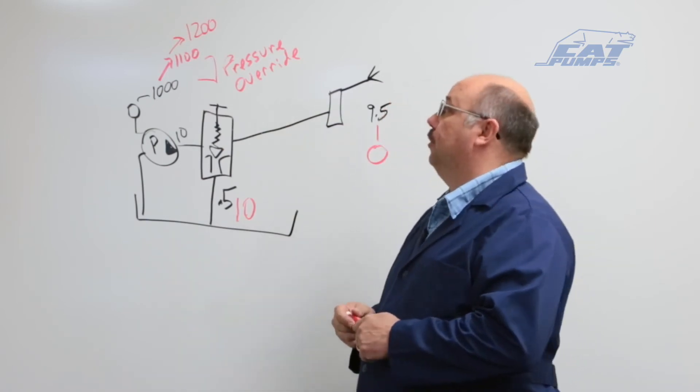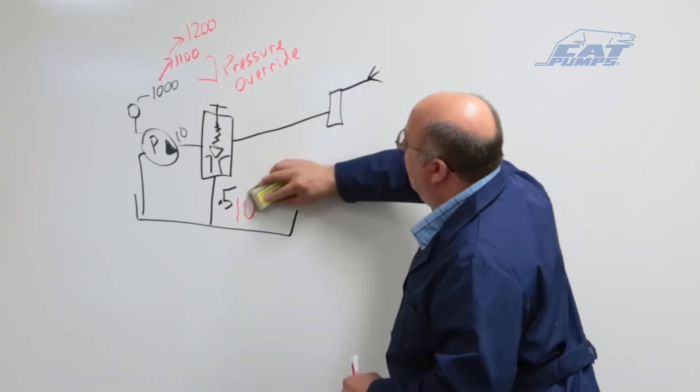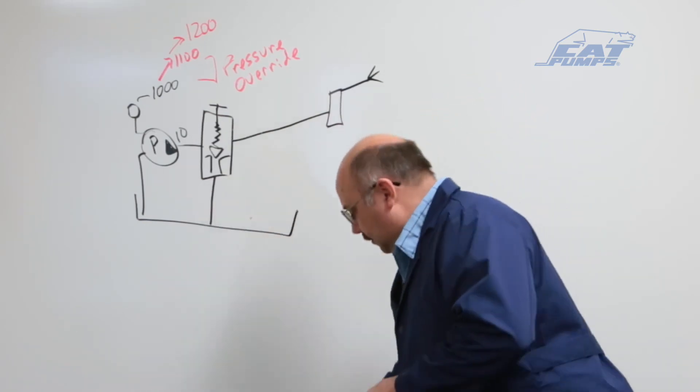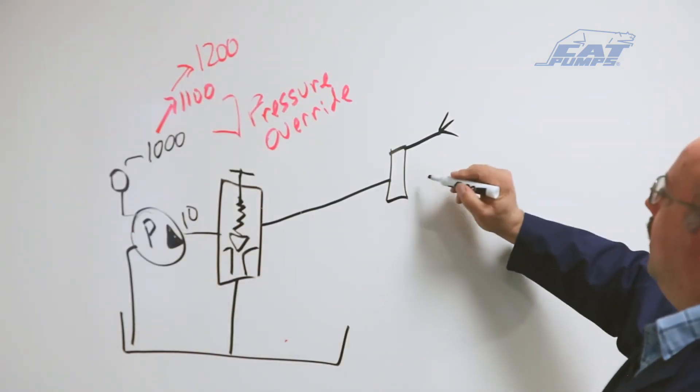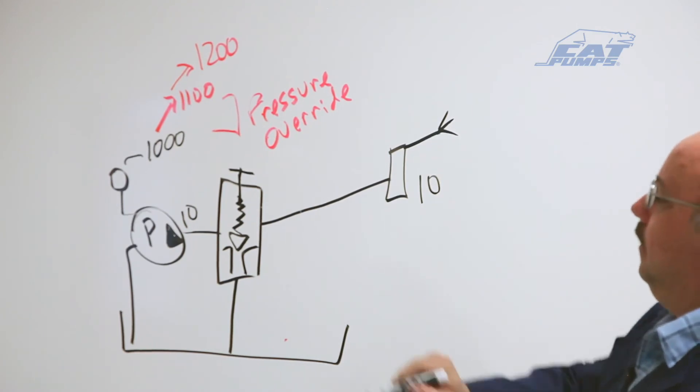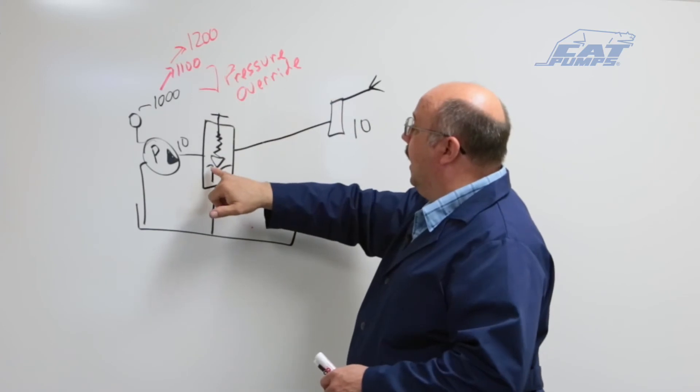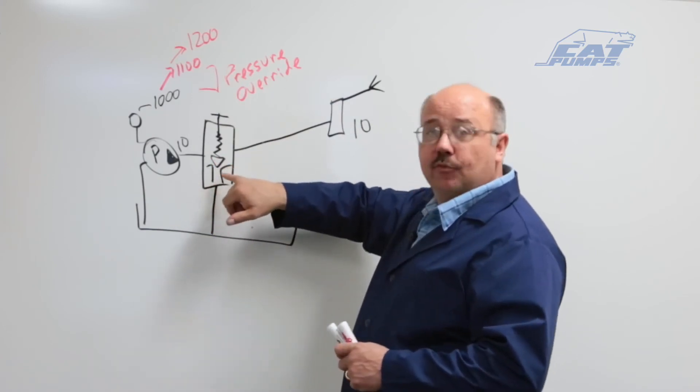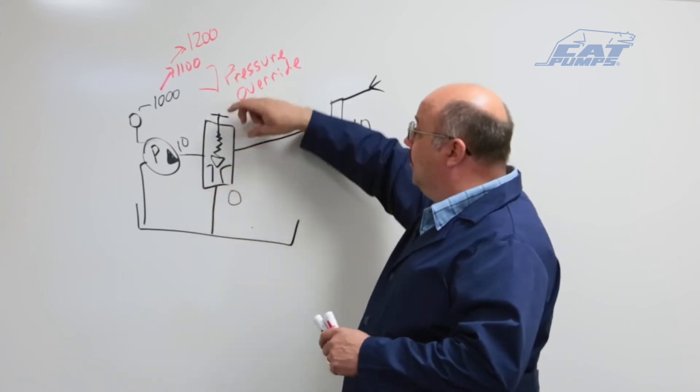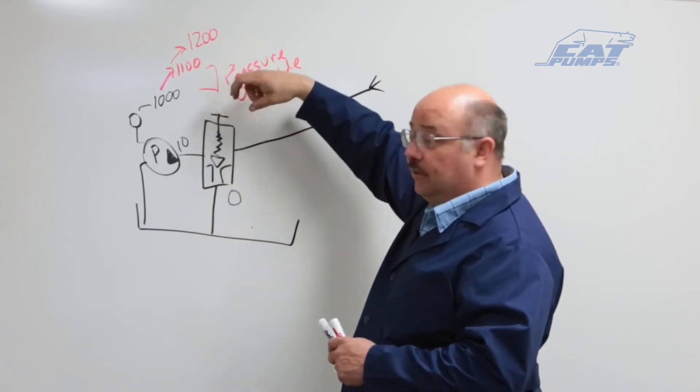Now another thing that can happen with pressure override is if we run too much flow out the nozzles. If I go back and keep this at 10, but I run this at 10 and run this at zero, I have now adjusted this so tight that I have no opening to bypass.